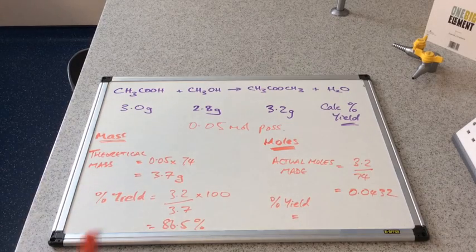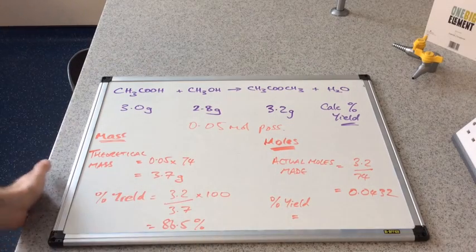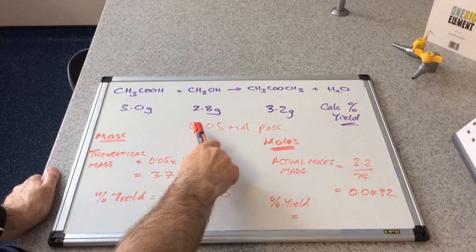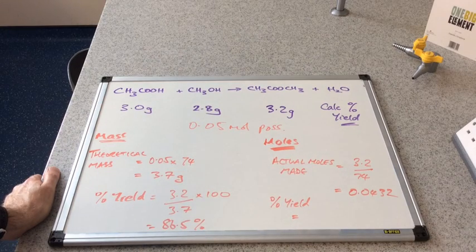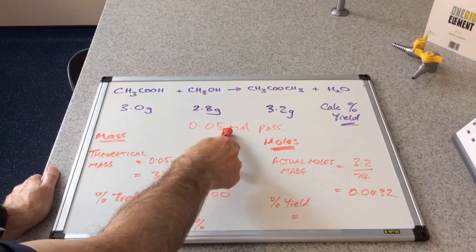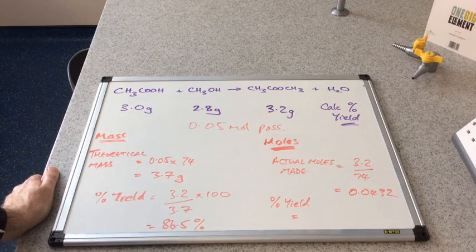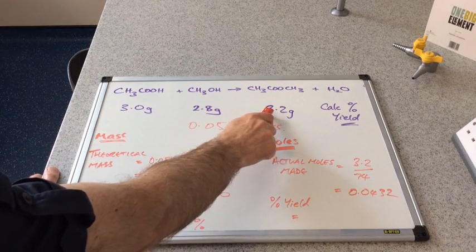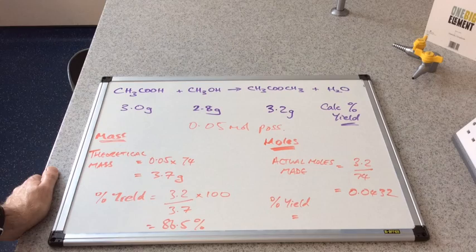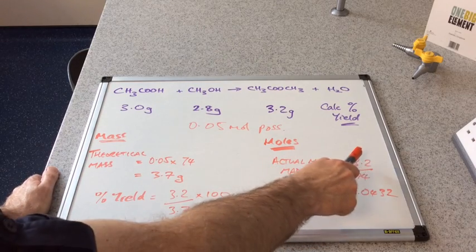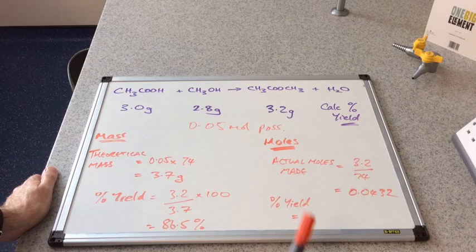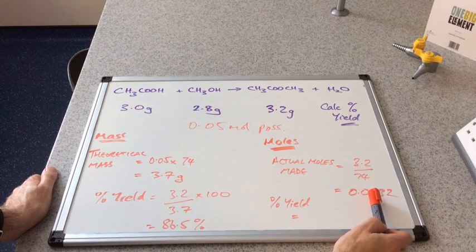If we take it down the moles route, we know that the maximum possible moles is 0.05. So that's your theoretical moles. We know that the actual mass produced was 3.2. What we're going to do is convert that to moles by dividing the 3.2 by the MR of the ester, which comes out at 0.0432.